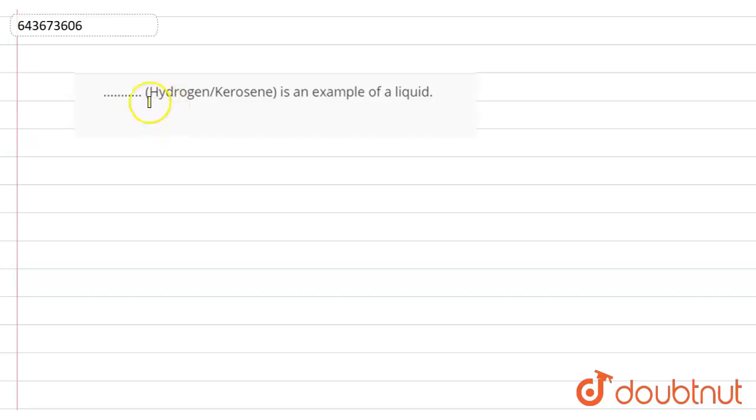Hello everyone, we have a statement where we need to choose between hydrogen and kerosene. So dash is an example of a liquid.